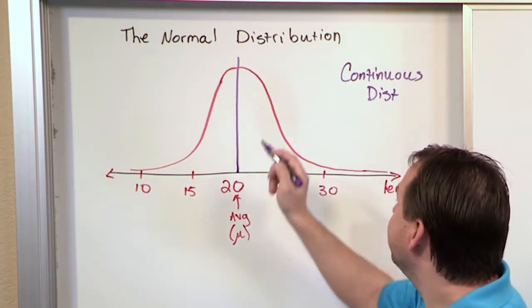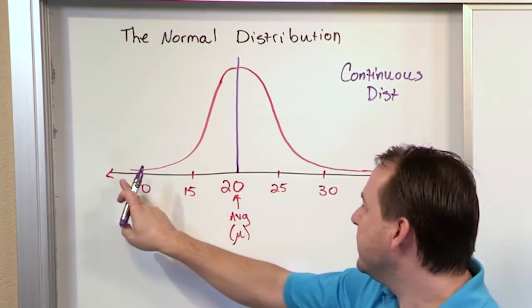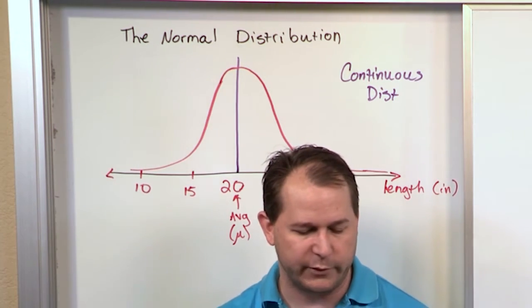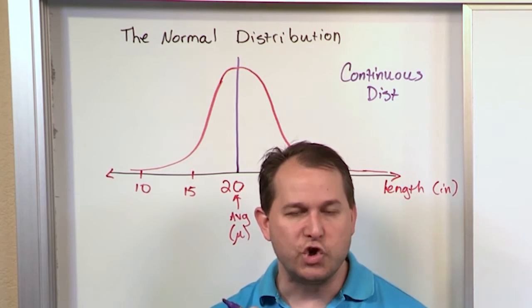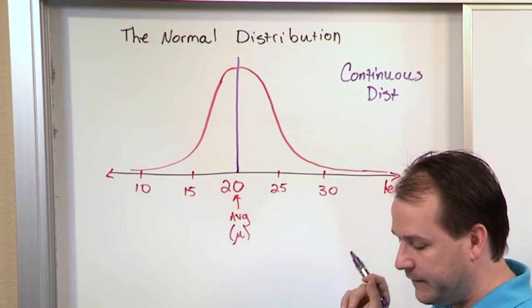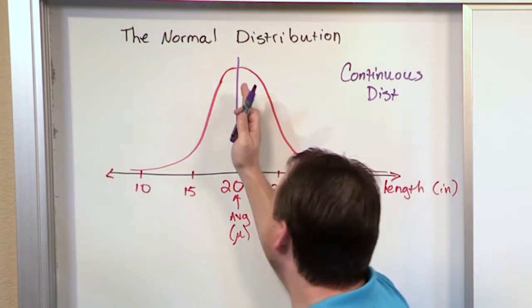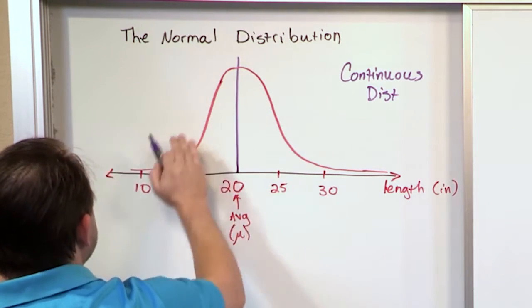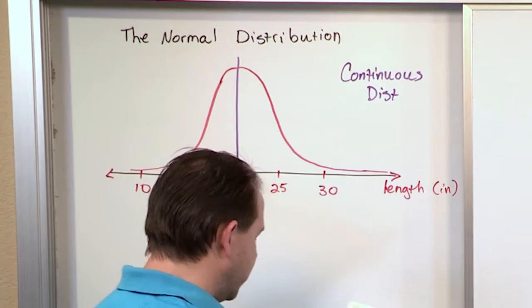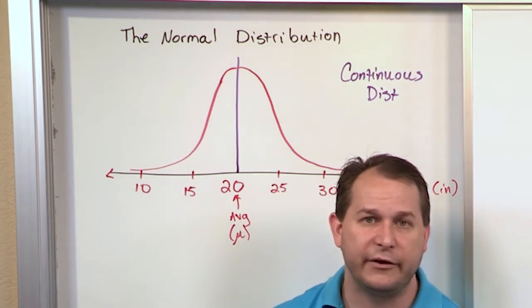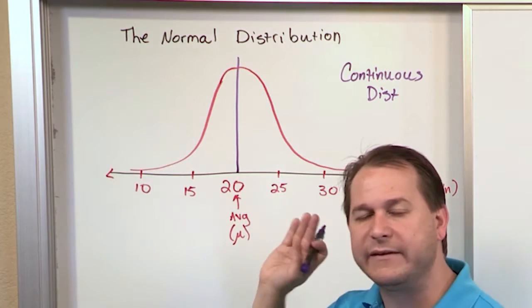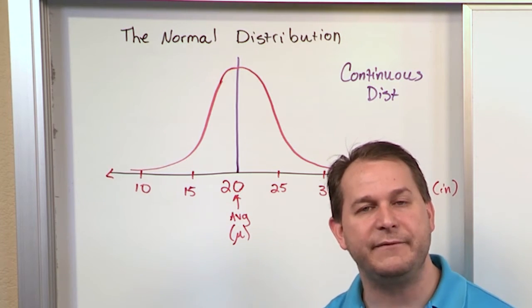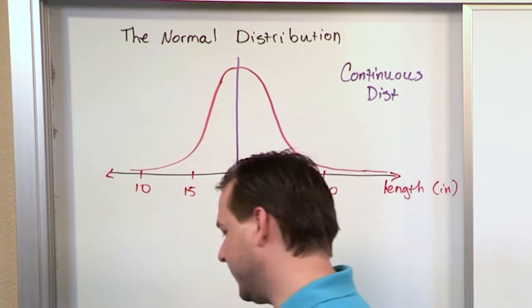Number three: the random variable x is the length of the watermelon — we do the experiment, pull the watermelon, and that's our random variable. Number four: the normal curve we have here is symmetric about the mean axis — if you were to fold a sheet of paper and draw the other side, it should look absolutely symmetric on both sides. And it's bell-shaped. Number five is extremely important: this graph is completely defined by the mean of the population and the standard deviation of the length of the population.